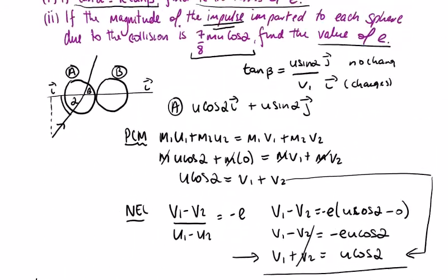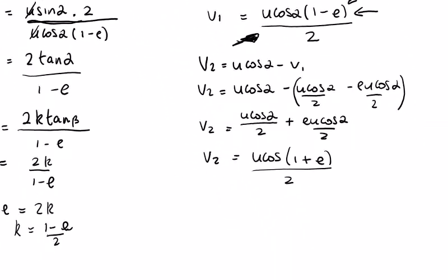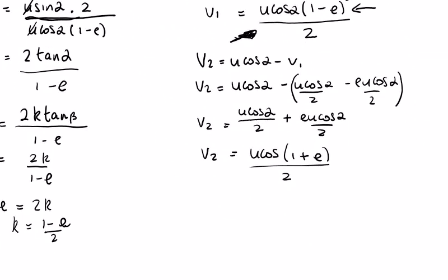Part two of this question: the magnitude of the impulse. What do we know about impulse? Impulse is mv minus mu. We may as well take sphere B because the u is zero to make it a little bit easier. So we want v2 for this, and the mass is m.